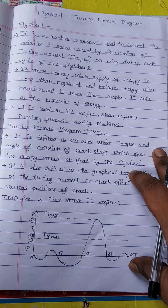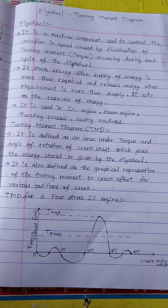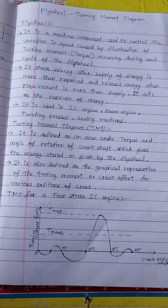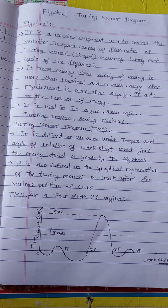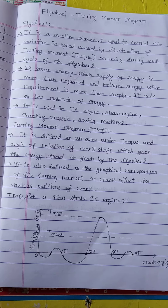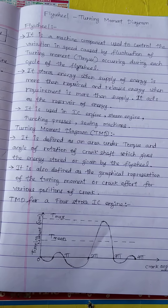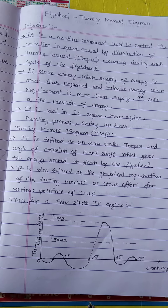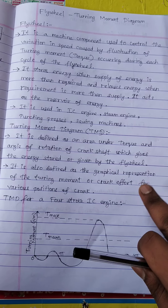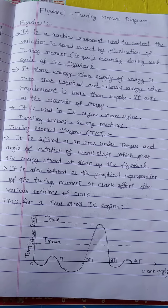So the flywheel is a reservoir of energy. The turning moment diagram is used to design the flywheel. Turning moment diagram is the graphical or pictorial representation of the turning moment versus crank angle. It can be defined as the area under the torque and angle of rotation of the crankshaft, which gives the energy stored or given by the flywheel. It is also defined as the graphical representation of the turning moment or crank effort for various positions of the crank.